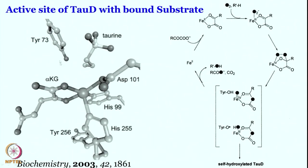When taurine is not there, tyrosine gets involved in the reaction. That is quite unusual, but what you can conclude is that since the iron-oxo species being generated is so reactive, if the organic substrate that needs to be hydroxylated is not positioned perfectly or is missing, tyrosine is going to be the substrate and tyrosine-to-catechol formation can occur. We will see that in a separate slide.